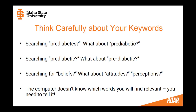Think about word variations from nouns to adjectives: pre-diabetes — what about pre-diabetic? Pre-diabetic — what about pre-hyphen-diabetic, compound words? Sometimes one form is used, sometimes the other, and it's hard to predict. And synonyms for common words like beliefs — there are so many other ways to say it: attitudes, perceptions. Thesaurus.com may really help you here. Bottom line: the computer doesn't know which words you'll find relevant. You need to decide and tell it.